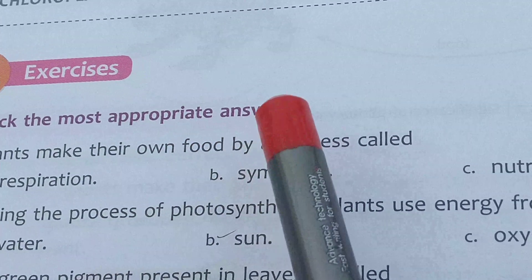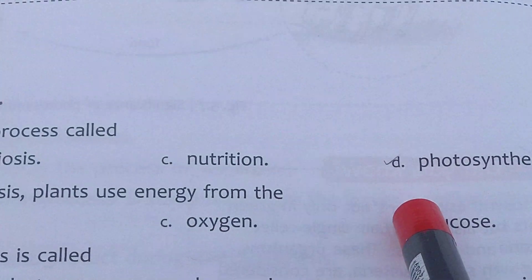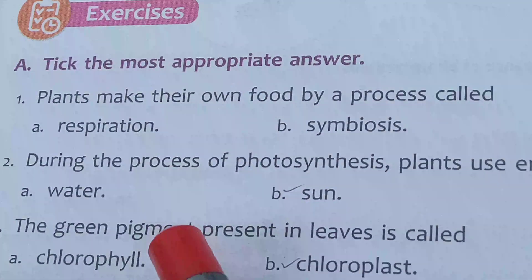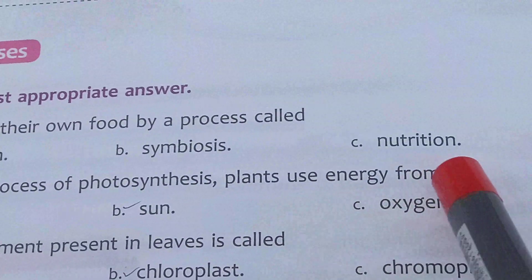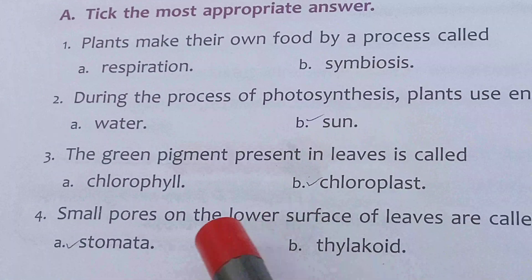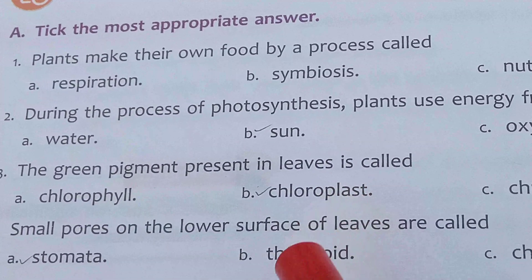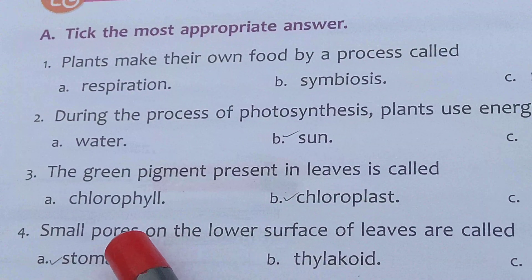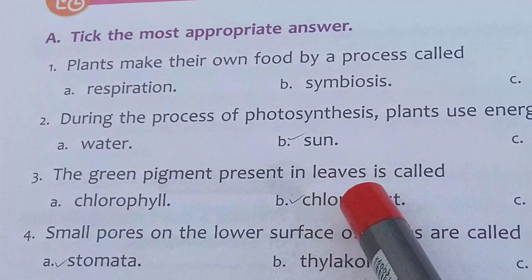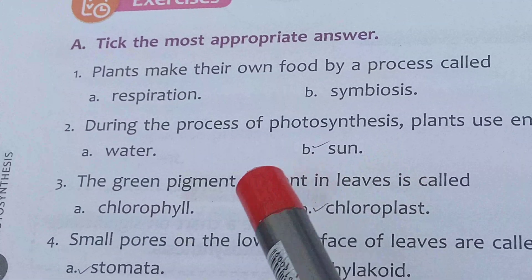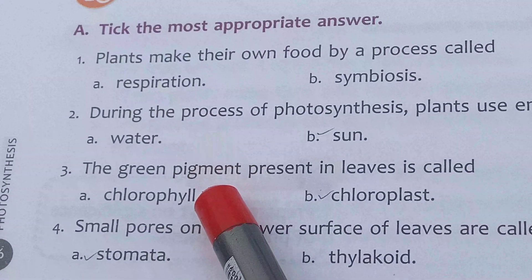Plants make their own food by a process called photosynthesis. During the process of photosynthesis, plants use energy from the sun. The green pigment present in leaves is called chlorophyll. By mistake I have just ticked out chloroplast, but the answer will be chlorophyll. So you will change it. Answer is chlorophyll.